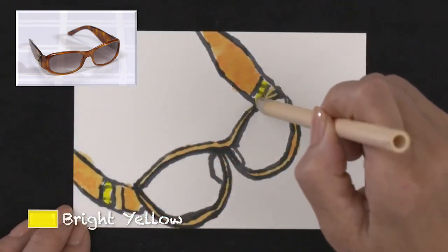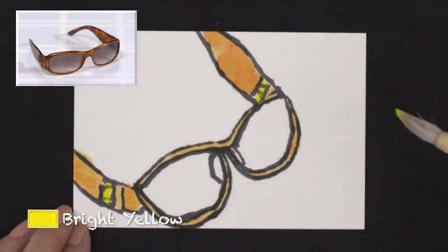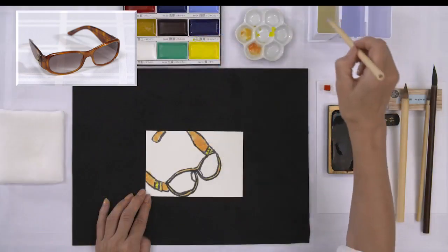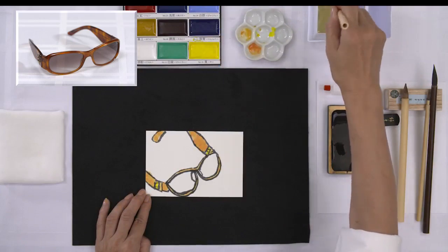For the metal hinges, use the coloring brush and paint them bright yellow. Wash the brush well when changing the colors.